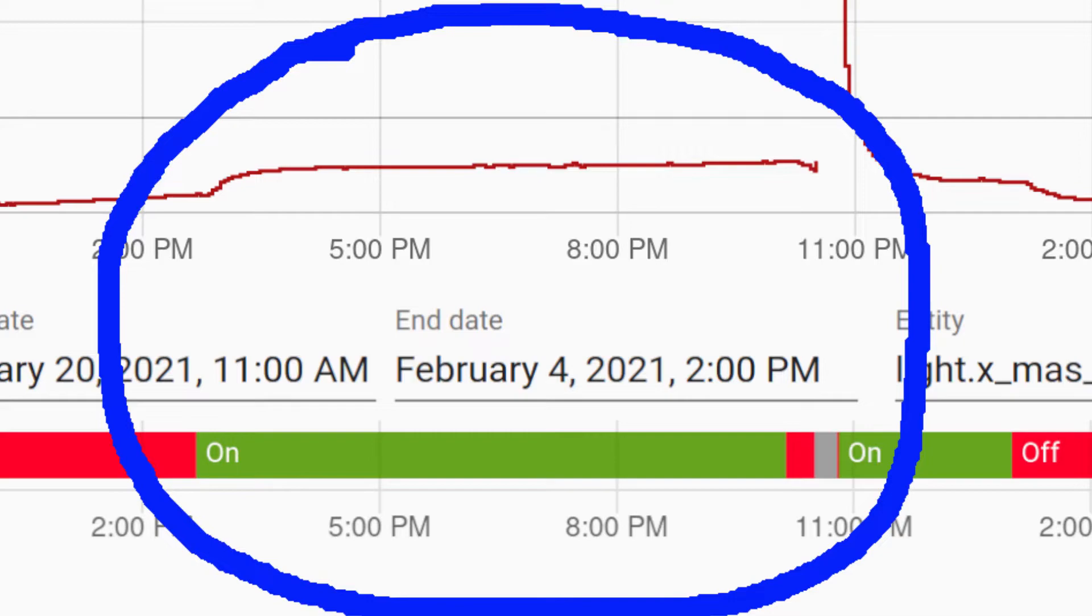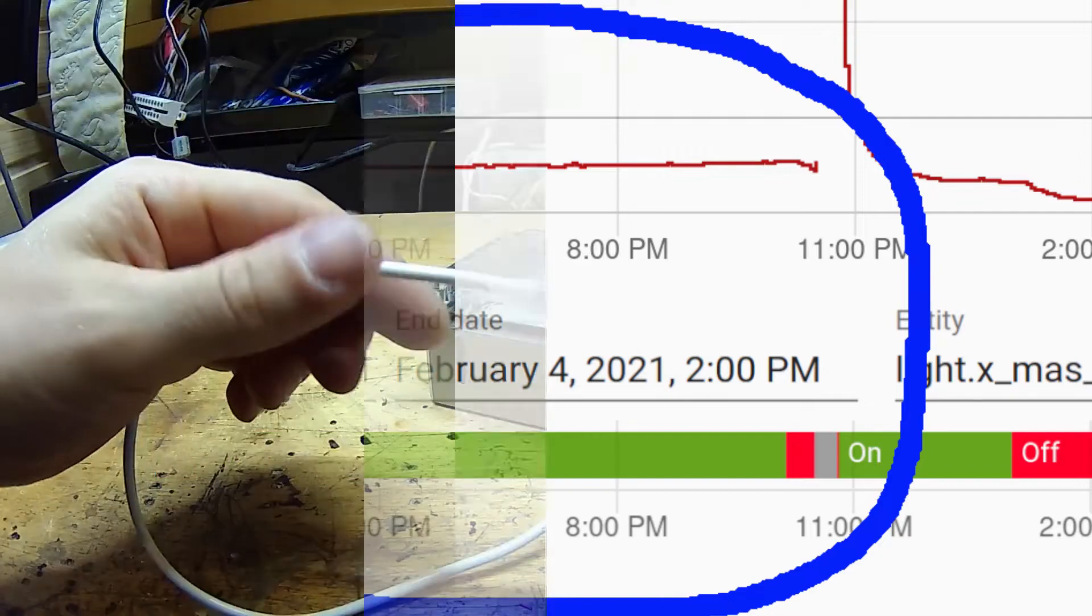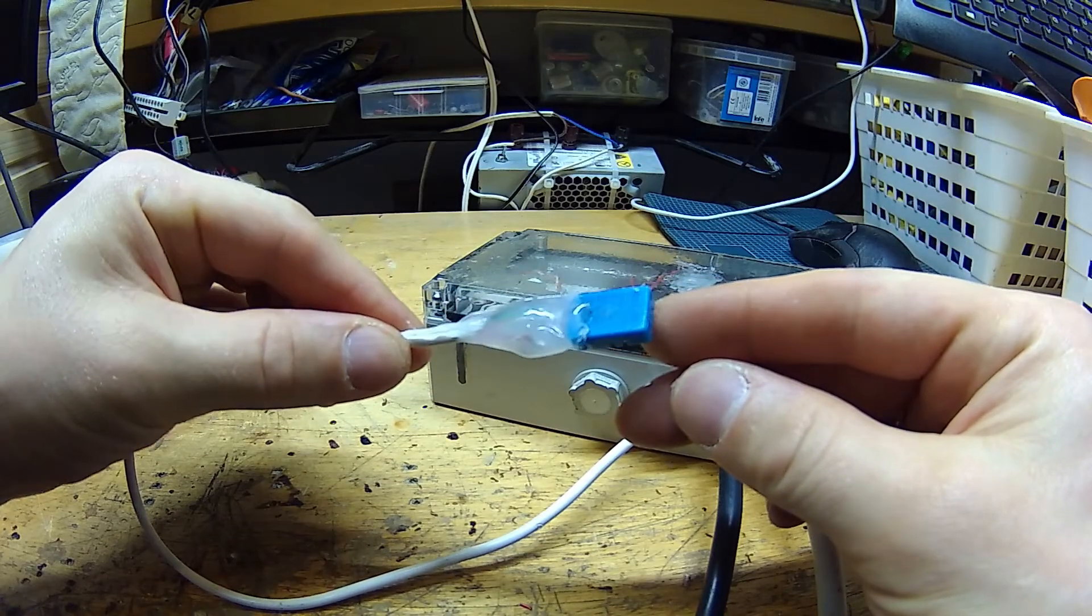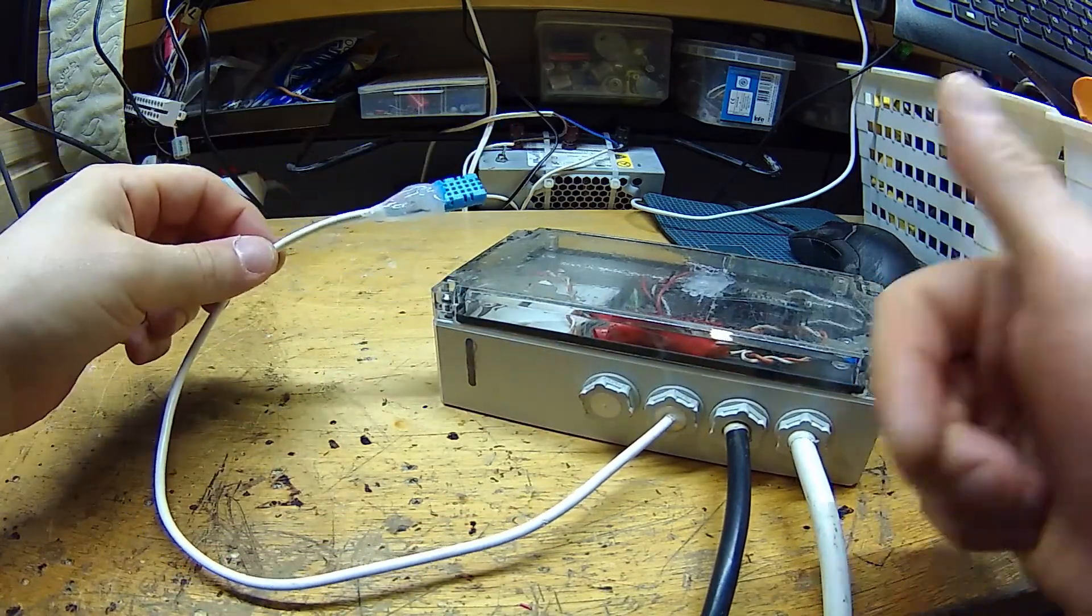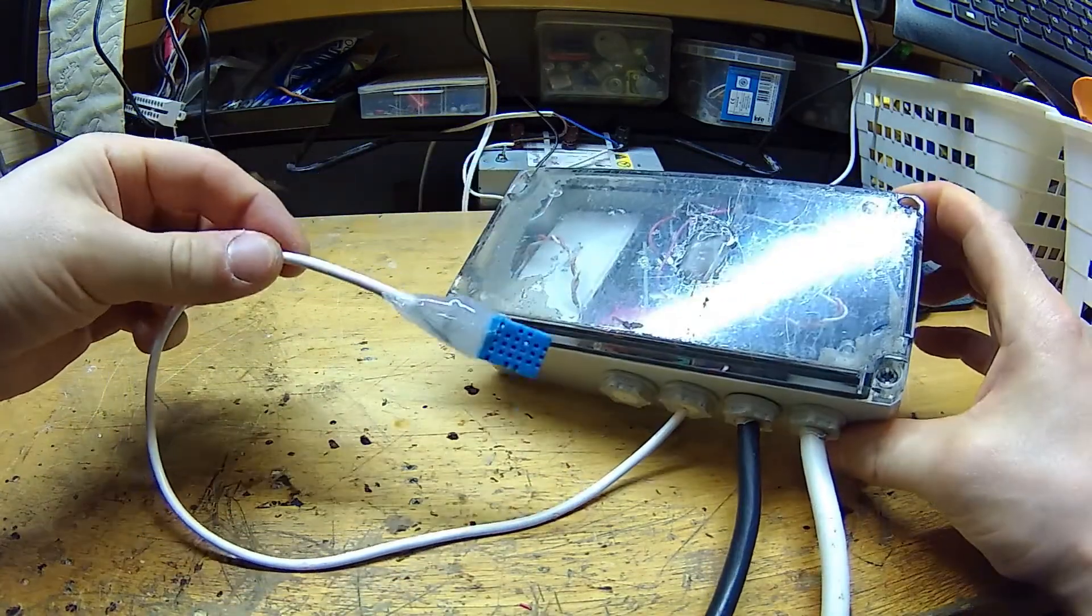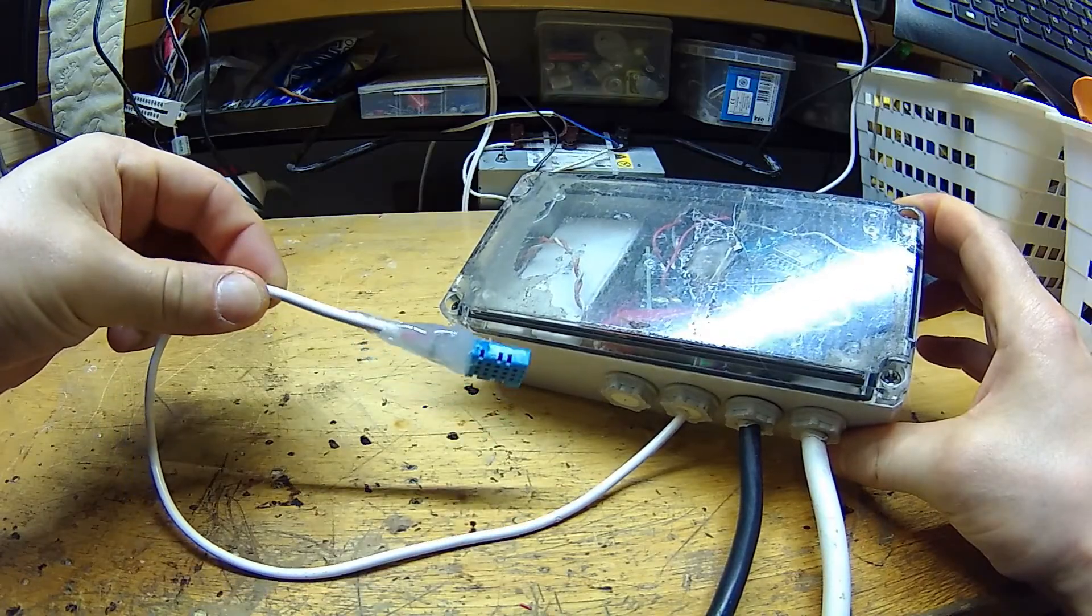Or it also could be some electromagnetic reason for that, I'm not sure. Anyways, I fixed that by separating the sensor from the box with some wire. Here. This is the proper way to do it. You need to leave it hanging in the air away from any heat source.